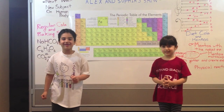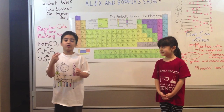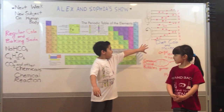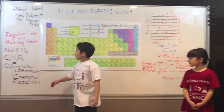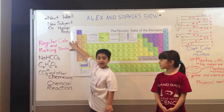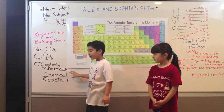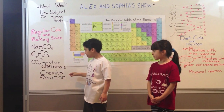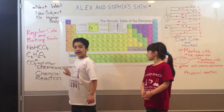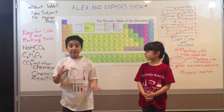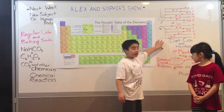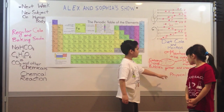This is going to be so much fun! We'll do two experiments. One is the reaction between Diet Cola and Mentos, which is a physical reaction. The other is the reaction between regular cola and baking soda, which is a mixture of a physical reaction and a chemical reaction. Let me explain this to you guys. First is the Diet Cola and Mentos experiment — this is a physical reaction.